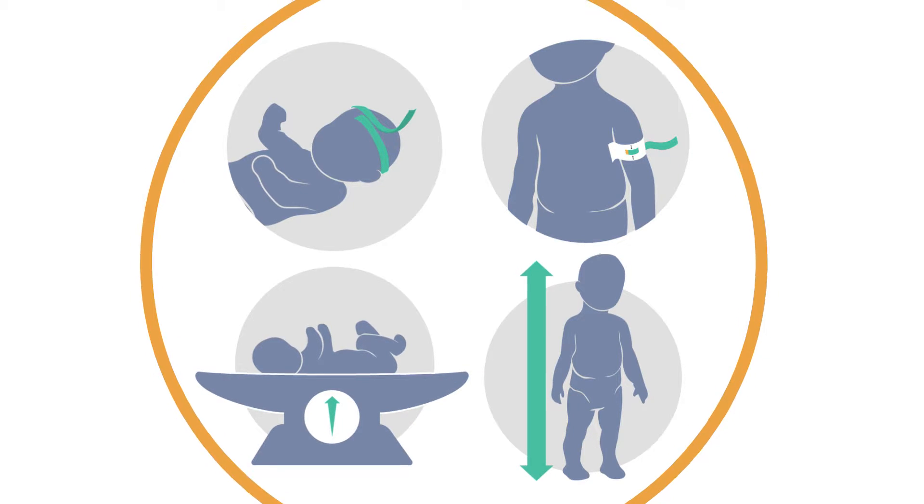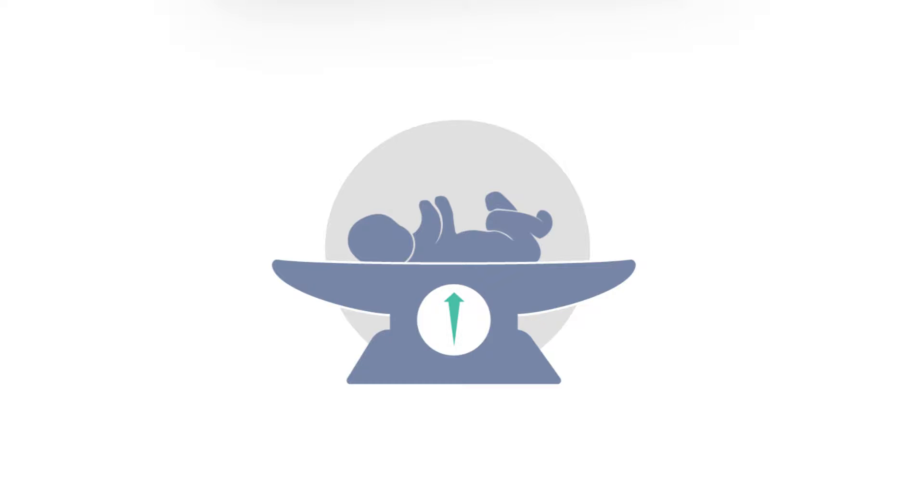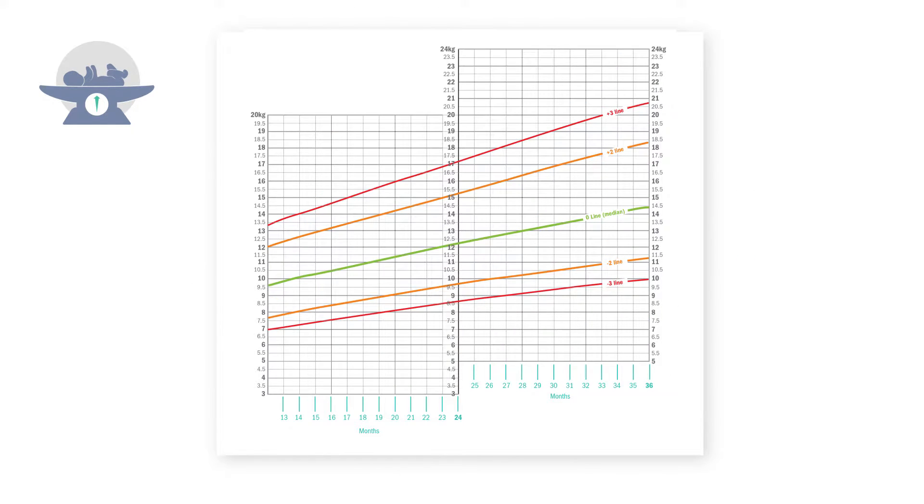So let's start by looking at one of these variables, weight. I'm going to be using a typical South African weight for age growth chart. In this graph, weight in kilograms can be seen here on the y-axis, and age is found along the bottom, along the x-axis.